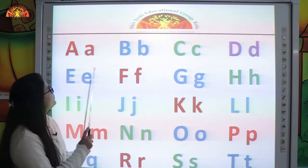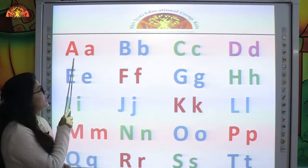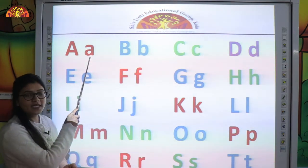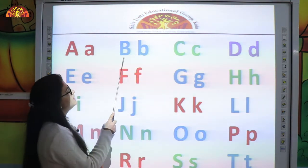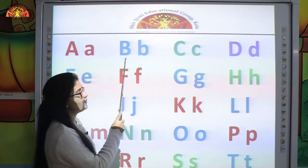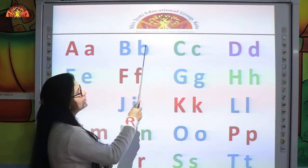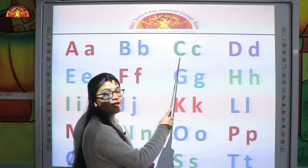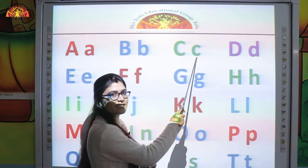Everyone look here and tell me which letter is this? This is uppercase letter A. And this is lowercase letter A. This is uppercase letter B. This is lowercase letter B. This is uppercase letter C. This is lowercase letter C.